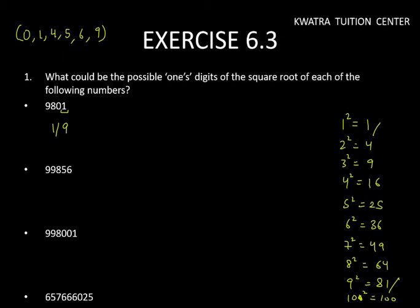Now let's look at the second one, 99856, which ends in 6. So where do we see 6 as an ending? We see 4 squared ends in 6 and 6 squared ends in 6. So the answer is 4 or 6.